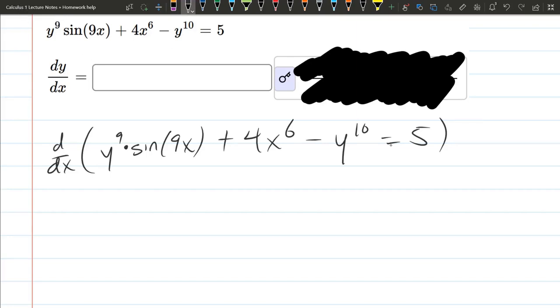The outermost thing happening is a product, so we're going to take derivative of y to the 9th, which is 9y to the 8th, but we're taking an x derivative of y, so we get an extra y prime, times just the original sine 9x.